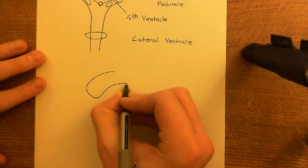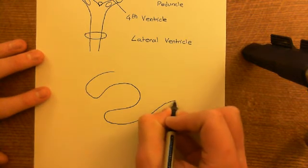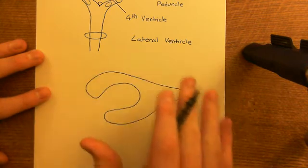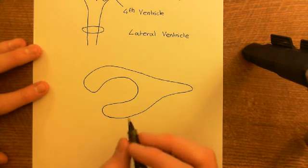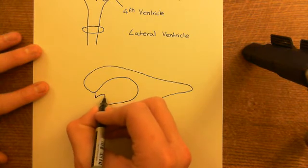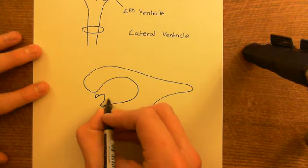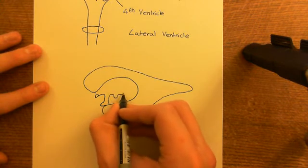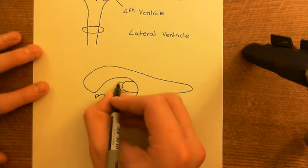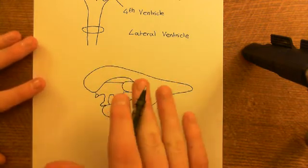Here is the head of the left lateral ventricle, which curves round and then has a tail portion coming off down here. This is stretching through the left cerebral hemisphere. The other structures — the hypothalamus, optic chiasm, pituitary gland, mammillary body, midbrain, and thalamus — are sitting behind this left lateral ventricle.